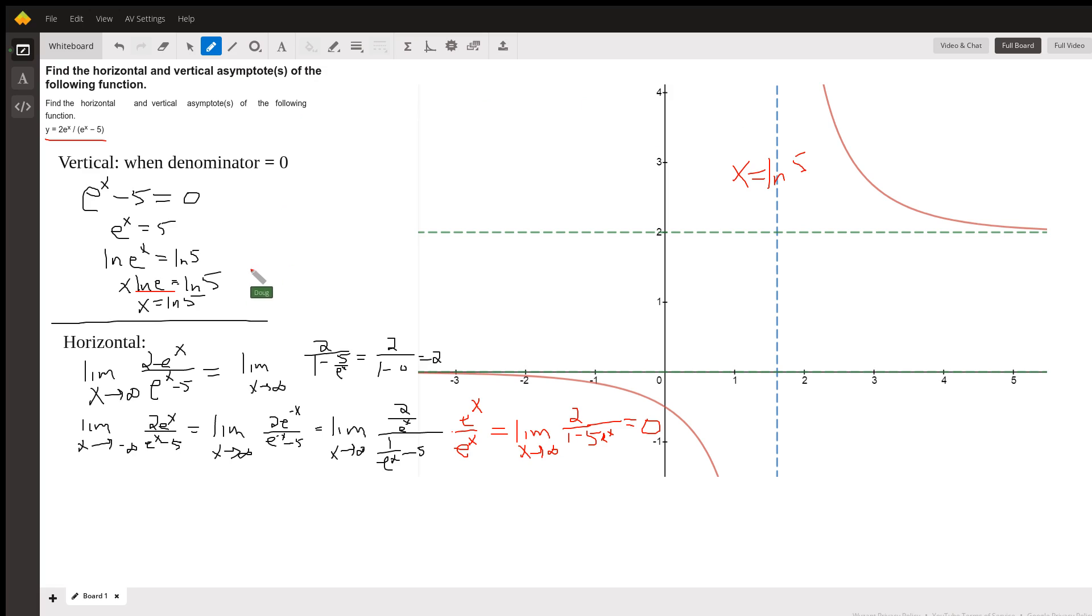For the horizontal asymptotes, we have to ask the question: what is the limit as x approaches infinity of this expression or this function? And we also have to ask what's the limit as x approaches negative infinity of the same thing. Now, frequently for rational functions, the limits in both directions will be the same, but it turns out they're not the same.